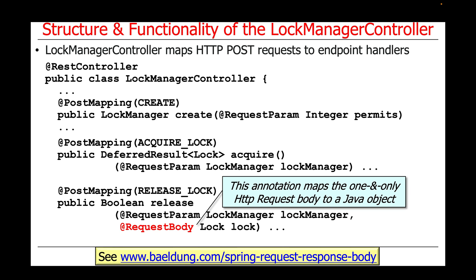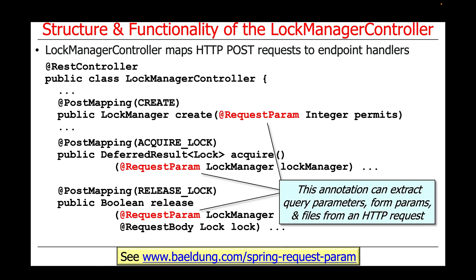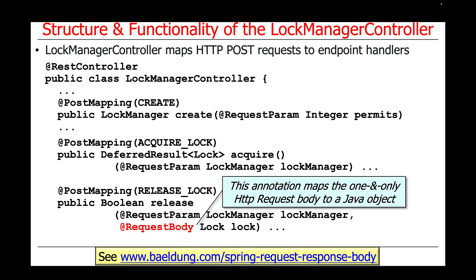Remember, there's only ever one request body per endpoint handler method, whereas you can have multiple request params, which travel with the GET request or the URI portion of the POST request. We define what we want from that portion of the request using the @RequestParam annotations, which instruct Spring to use Java reflection to extract various query parameters, form parameters, or even files from an HTTP request. So we're mixing and matching — sometimes using @RequestParam and in the case of release, using @RequestBody. Remember, there can only be one @RequestBody annotation per endpoint handler method.